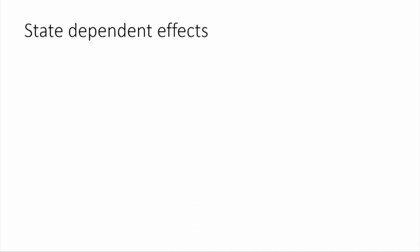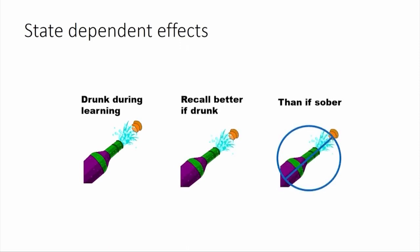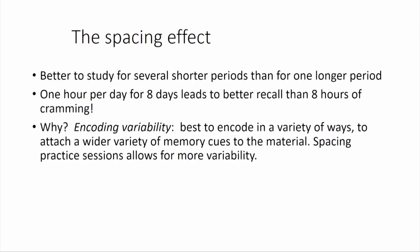Similarly, if you are drunk when learning something, recall is better when drunk than when sober. It would not be suggested as advice, but if your metabolic state includes alcohol intake and you learn something in that state, recall is better in the same state. Because that is where it was encoded and that is how it should be retrieved.